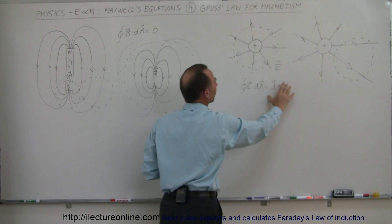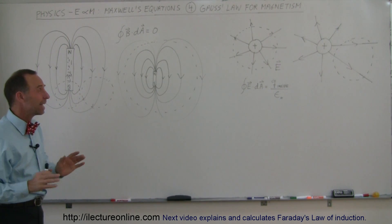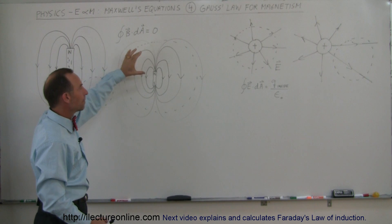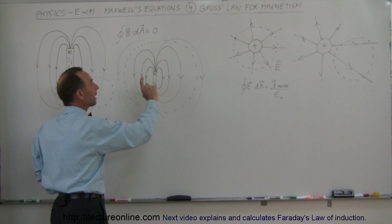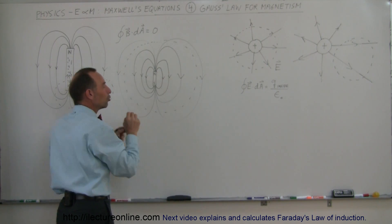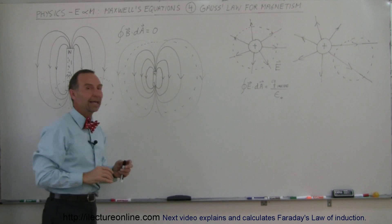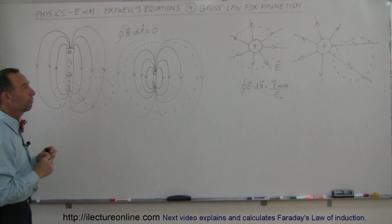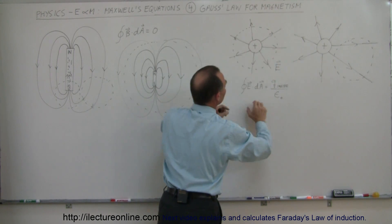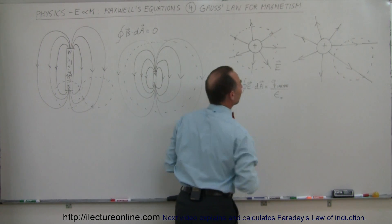This is different from the first equation, where encircling a charge always gives a non-zero result equal to q inside divided by epsilon sub zero. With magnetic fields that's never the case. The big reason is that when you enclose a magnet, it always has both a north and a south pole. The field lines always form complete continuous loops through and around the magnet — there's no emanation from a point source like there is for electric charge.